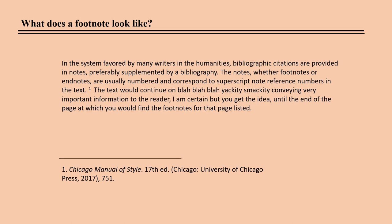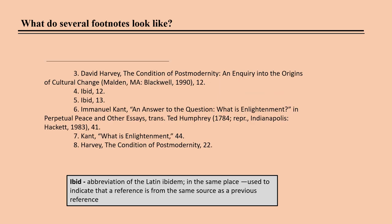The superscript number refers the reader to the note indicated by the same number at the bottom of the page. In this case, the number 1 indicates the information preceding it in the text came from the Chicago Manual of Style, 17th edition. When there is more than one footnote per page, they are listed at the bottom of the page in numerical order.